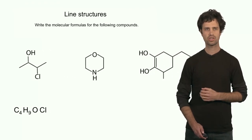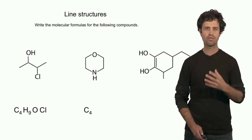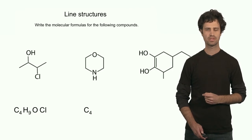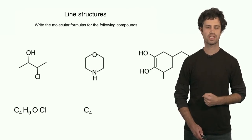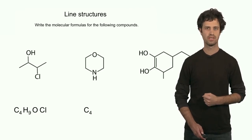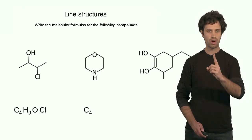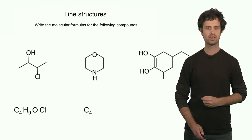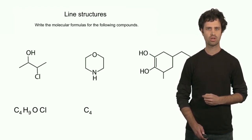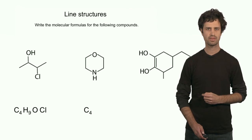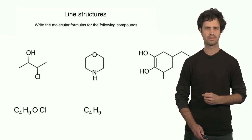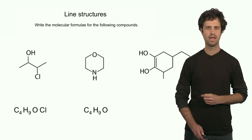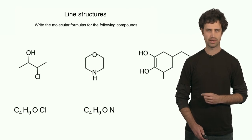The second structure has a total of four carbon atoms. Each of these carbon atoms has two hydrogens attached, so that's a total of eight, plus one more hydrogen bonded to the nitrogen, giving nine hydrogens in total. It also has one oxygen and one nitrogen.